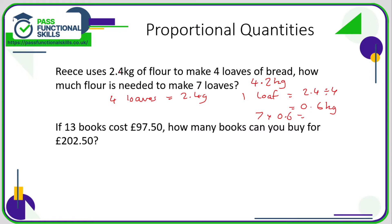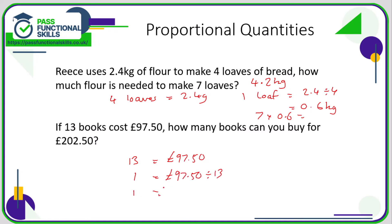If you wanted to you could have converted into grams, but if we're using a calculator we can just leave it in kilos and work around the decimals. So: if 13 books cost £97.50, how many books can you buy for £202.50? We know 13 books = £97.50, so how much does one cost? One book is £97.50 divided by 13 — let's type that into the calculator — which gives £7.50.